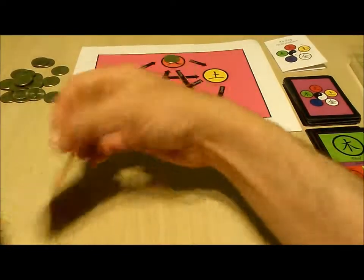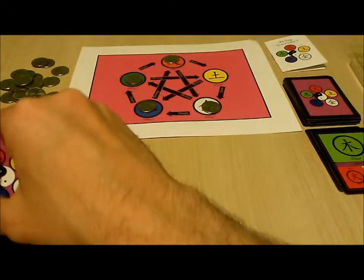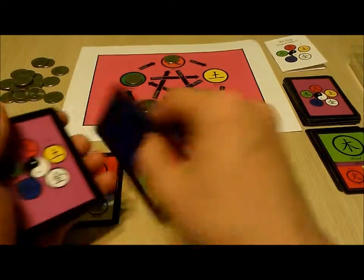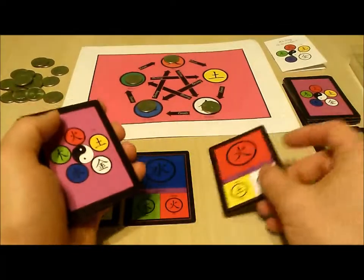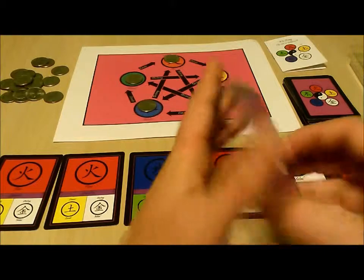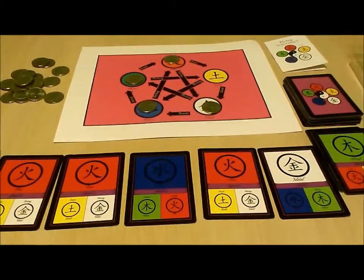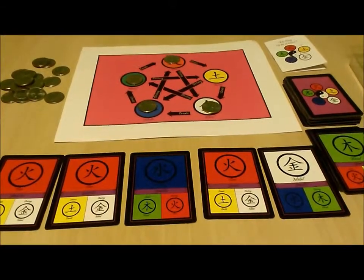Next we draw five cards to create our starting hand. If we draw the dragon we put it aside. Once we have our starting hand we put the dragon back in the deck and reshuffle. Since this deck is stacked for demonstration purposes we'll skip that part.